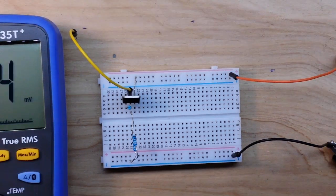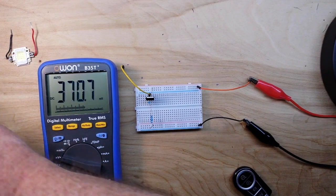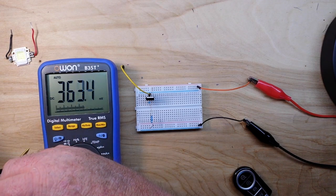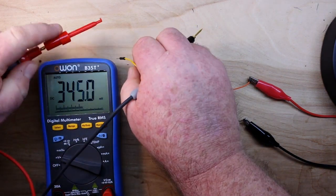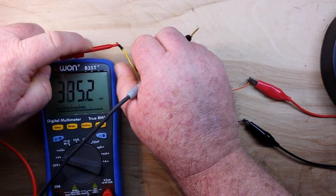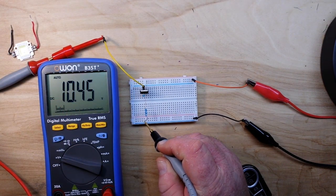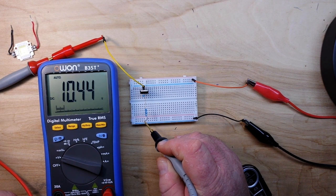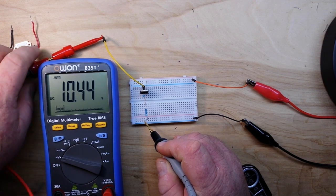So we'll zoom out here so you can see the meter and we'll get a reading of our voltage output. So 10.5 volts which is just fine, it's well within the range for this LED. Very good.